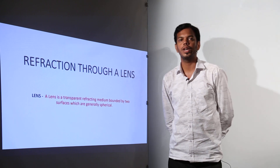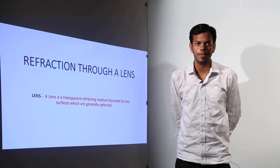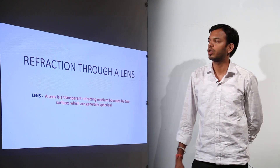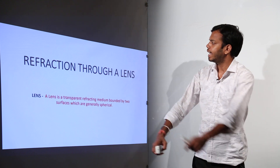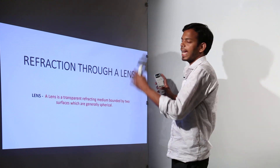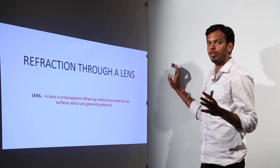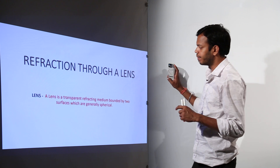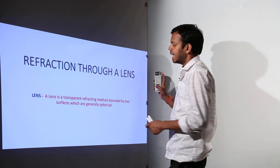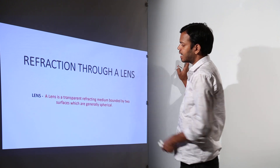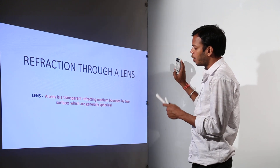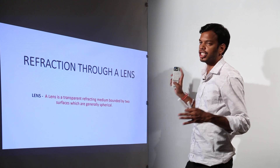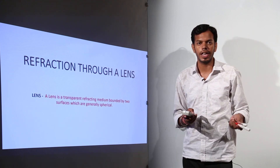Hello students, today we are going to start with another new chapter which is refraction through a lens. Now what exactly is a lens? I have already given you a definition but I will explain it in a simpler way. A lens is a transparent refracting medium bounded by two surfaces which are generally spherical.